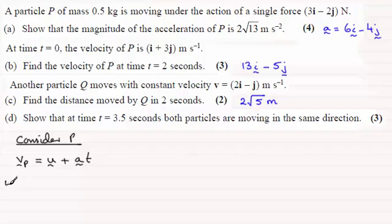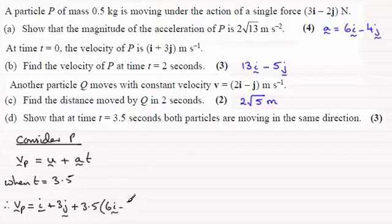So when T equals three and a half seconds, 3.5, we therefore have that velocity of P will be equal to the initial velocity U which we know is I plus 3J. So we've got I plus 3J. And then if I just say T times A, that'll be plus 3.5 times the acceleration of P. And we worked that out as part of part A. It was 6I minus 4J.